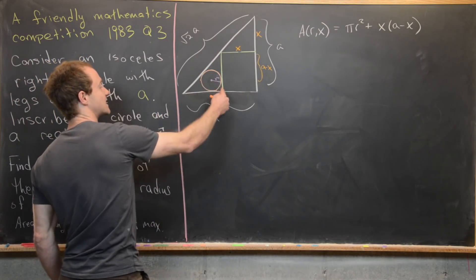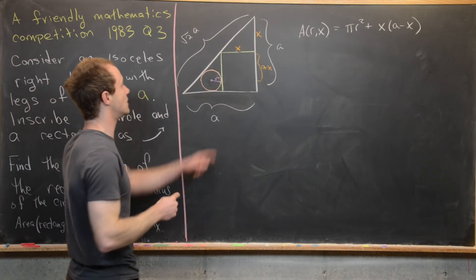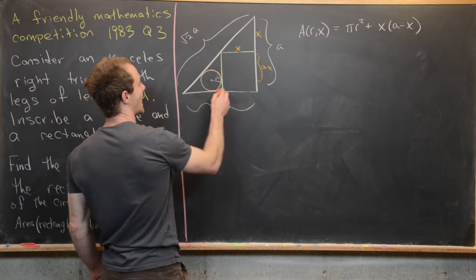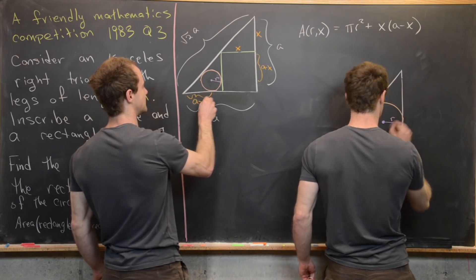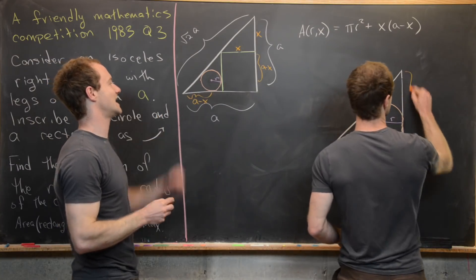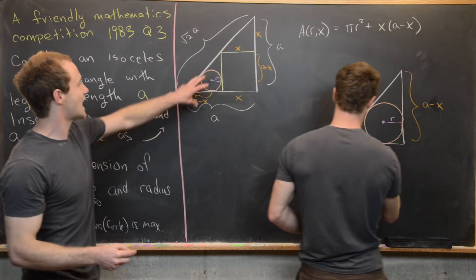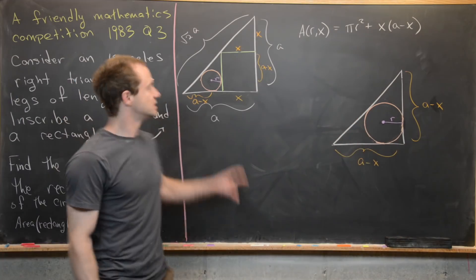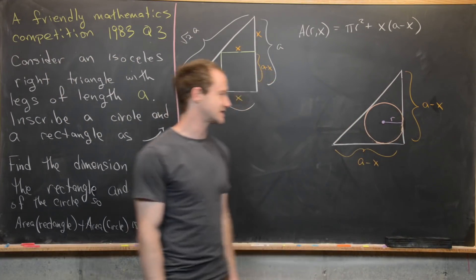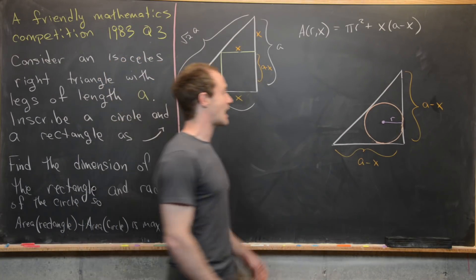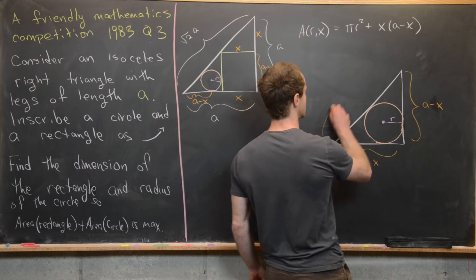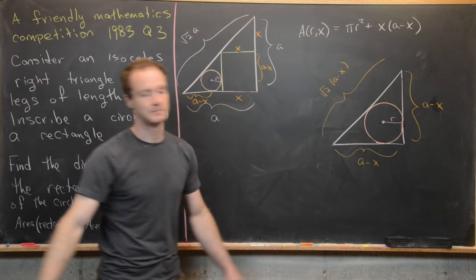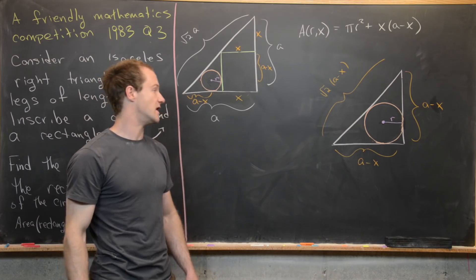We can notice that this left-hand sub-triangle is similar to the larger triangle for the same reason this upper triangle was. That tells us that this length here is also A minus X — because it's an isosceles triangle and this height is A minus X. We can bring this X down as well. I'm going to redraw this smaller triangle so we can do some analysis on it. It has a height of A minus X and a base of A minus X, which tells us it has a hypotenuse of square root of 2 times (A minus X) by the Pythagorean theorem.